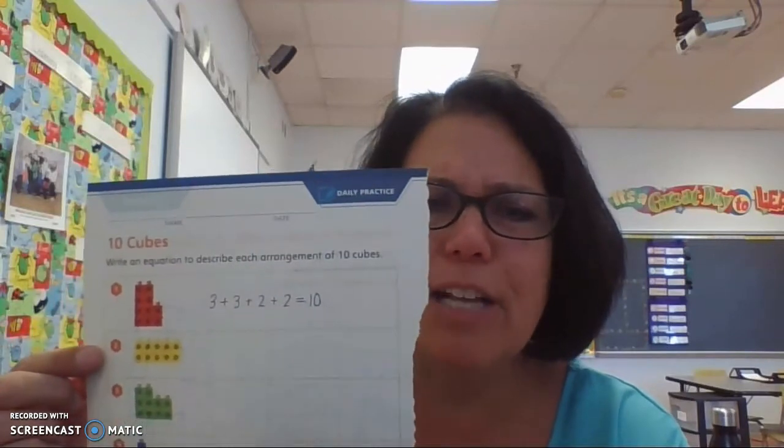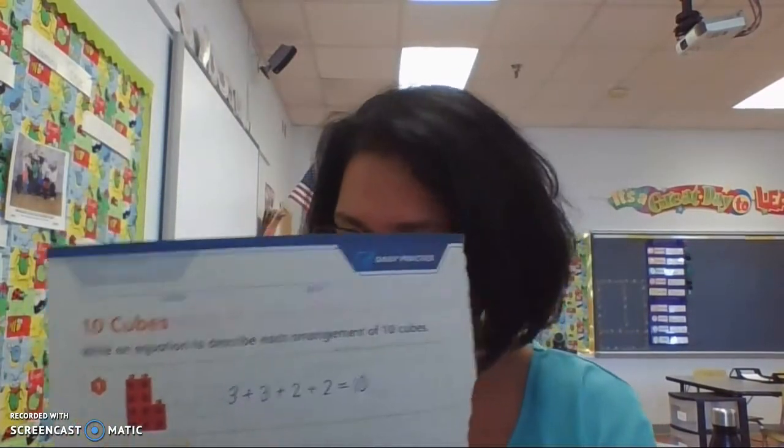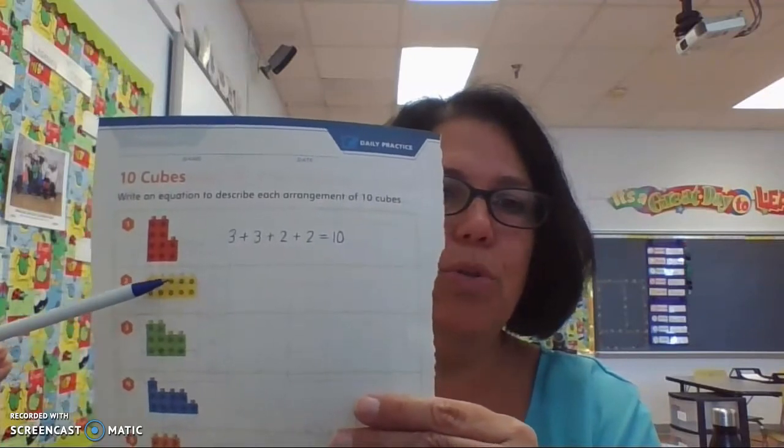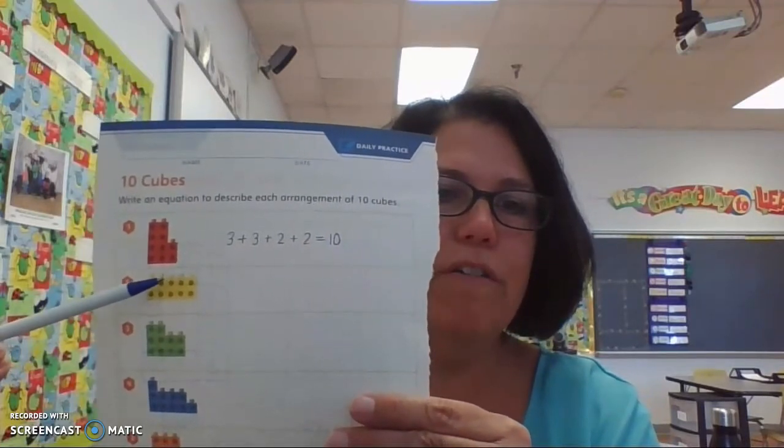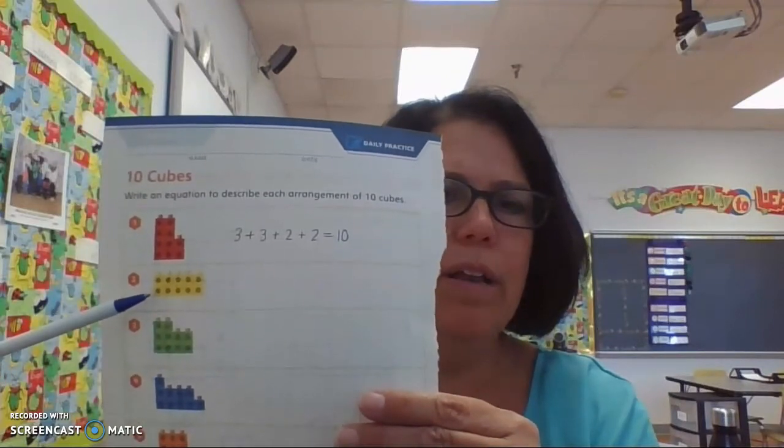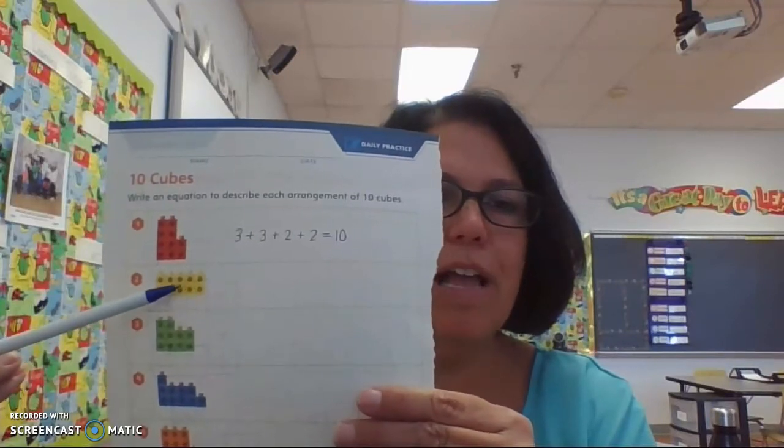All right. Let's take a look at this next one down here. So, how many cubes are on the top and how many cubes are on the bottom? So, let's count it and see. So, across the top, we have 1, 2, 3, 4, 5. And across the bottom, we have 1, 2, 3, 4, and 5.